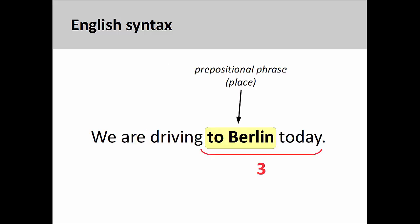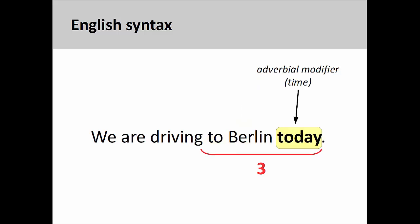Additional information is usually presented as prepositional phrases or adverbial modifiers after the verb in a third position. Here the prepositional phrase, to Berlin, describes the place to where the subject is driving. And here, also in the third position, is the adverbial modifier describing the time when this activity will take place.